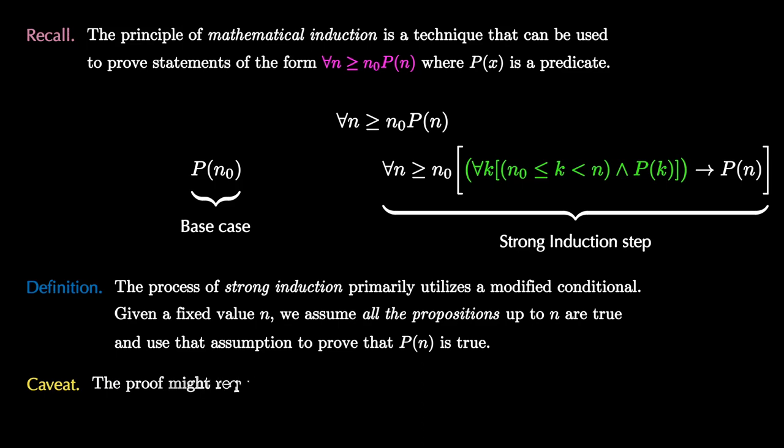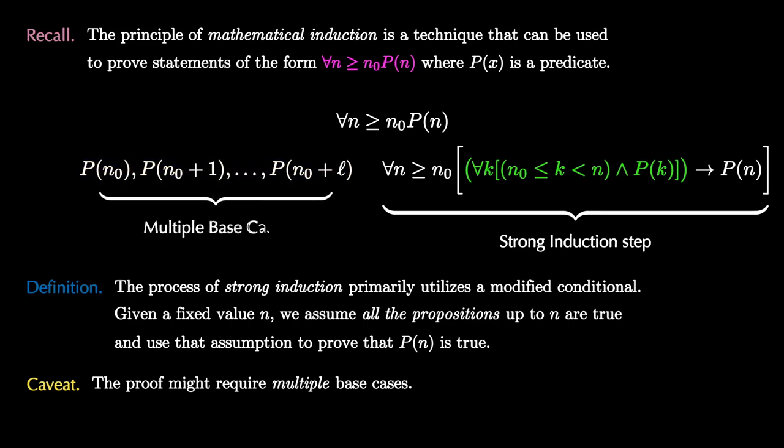Another caveat is that the proof might this time require multiple base cases, so we might first have to verify that a few of the first instances are true, and we don't know exactly how many base cases there are. It will depend on the problem.